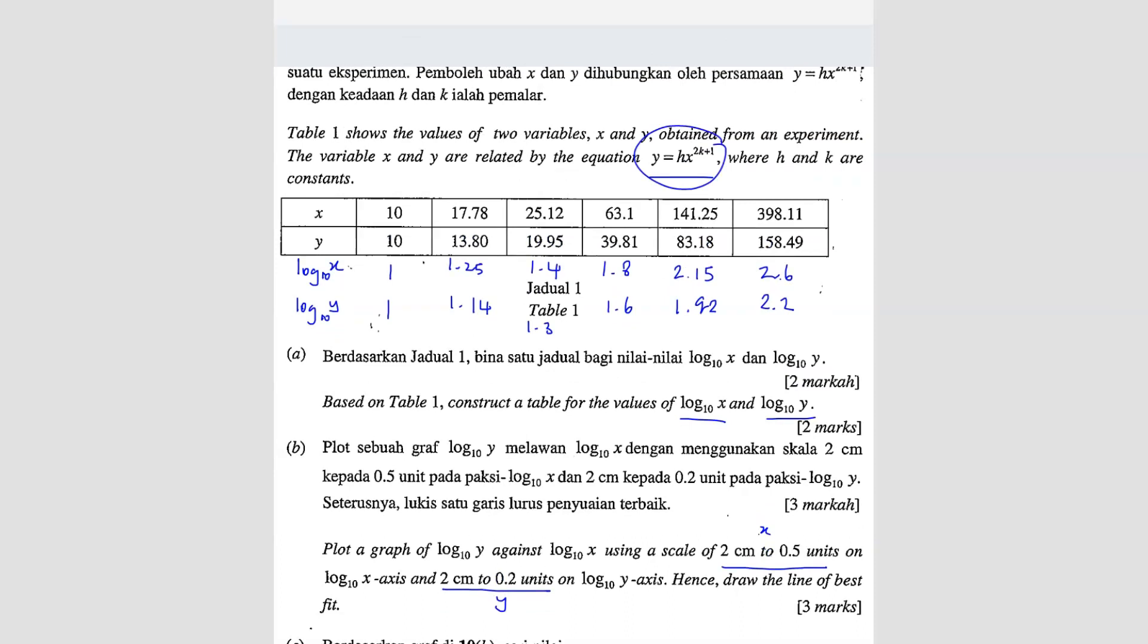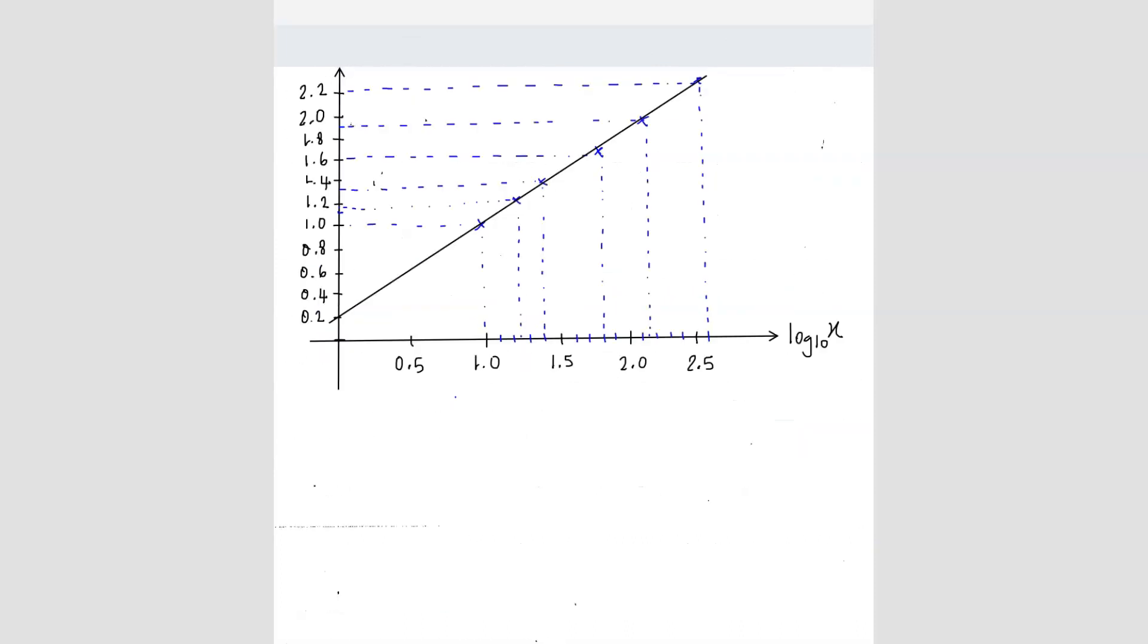Y equals to hx power 2k plus 1. So since we know that the y-axis is log y base 10 and x-axis is log x base 10, so what we can do is we can put log both sides of the equation. So we add log y base 10 equals to log h, sorry, log 10 and then here is x 2k plus 1.